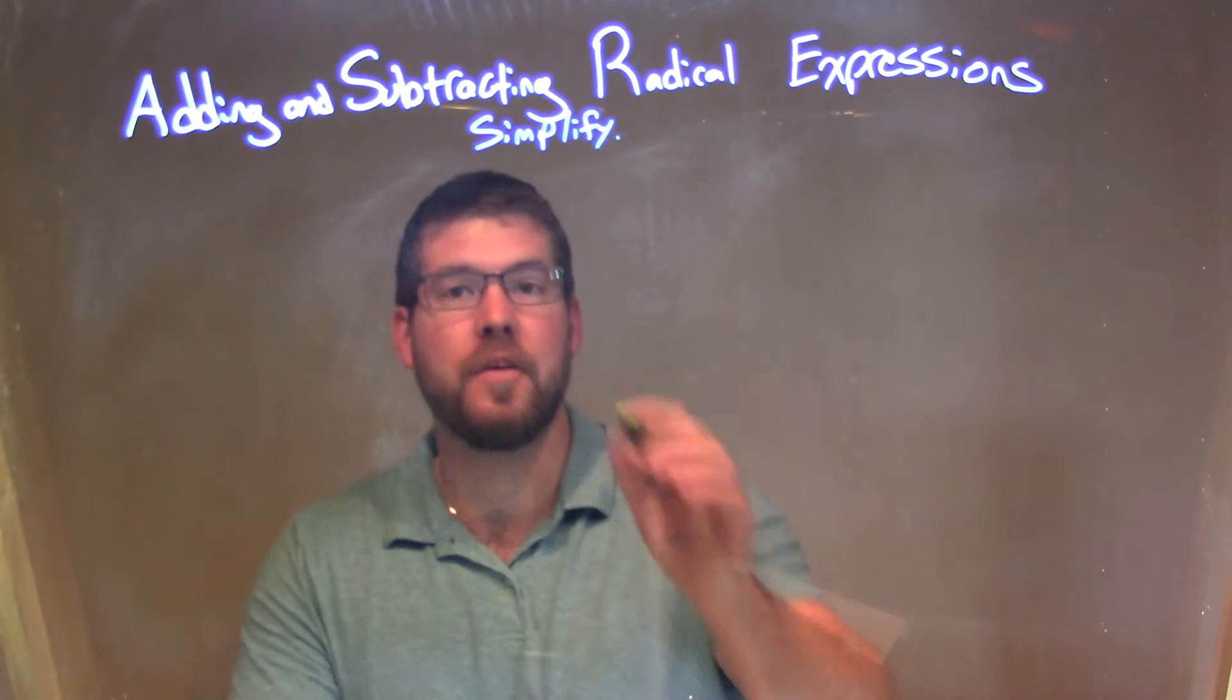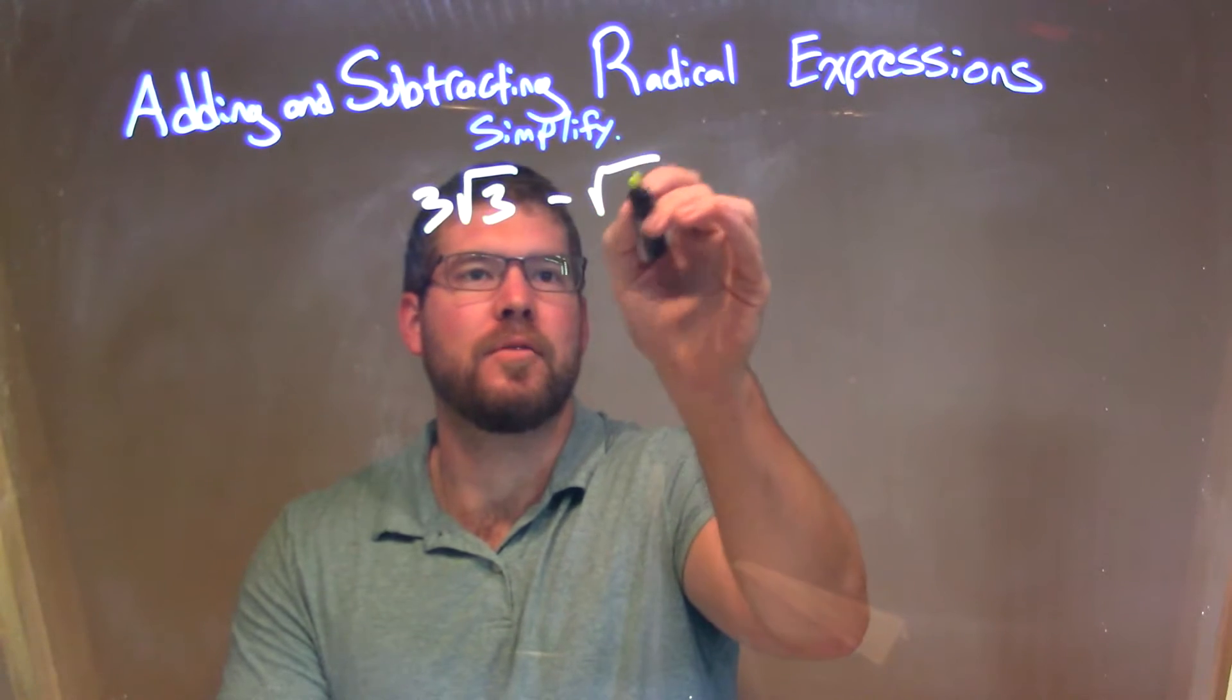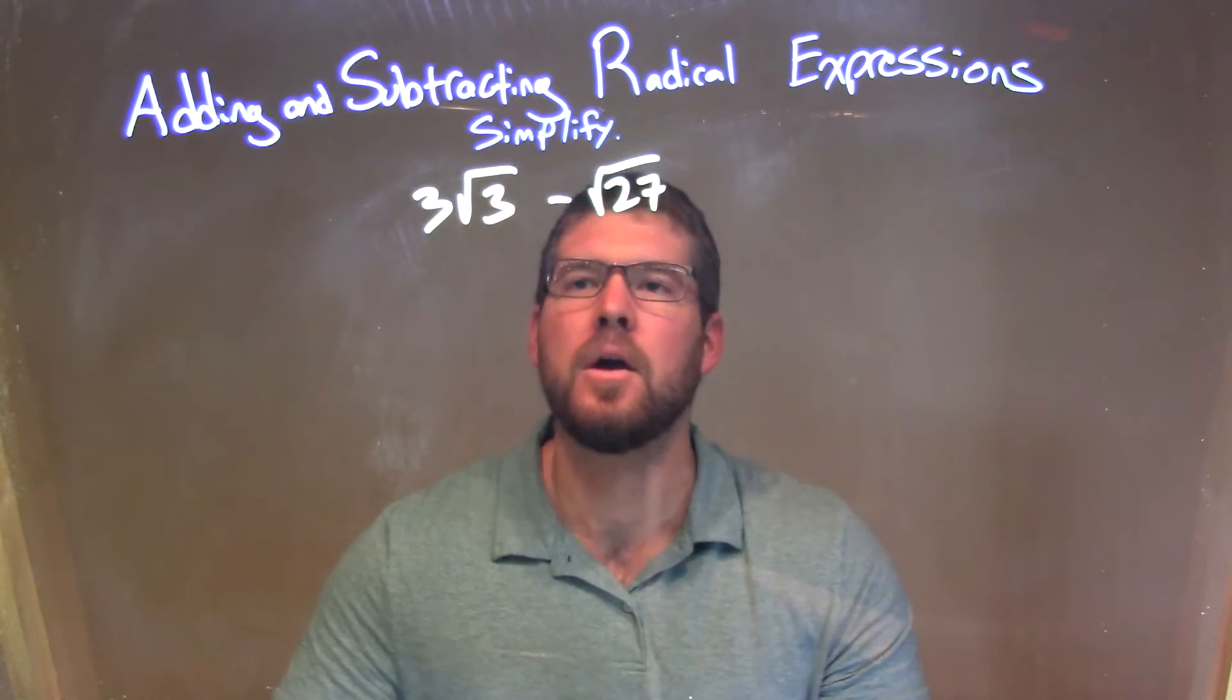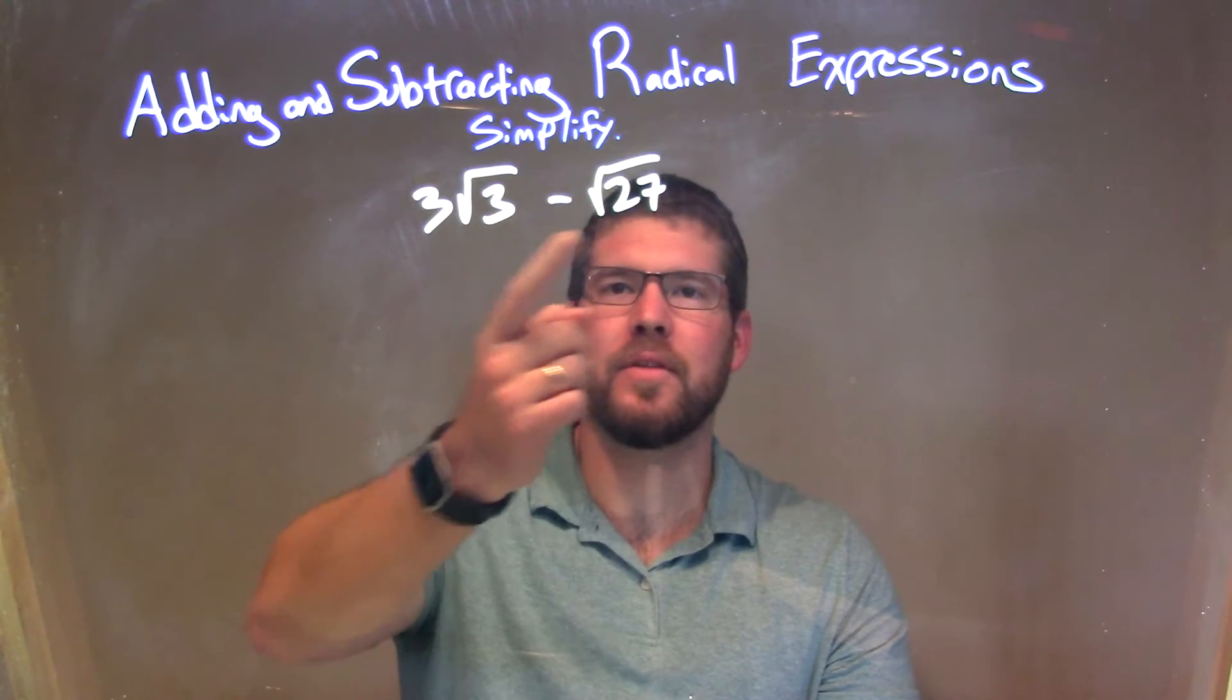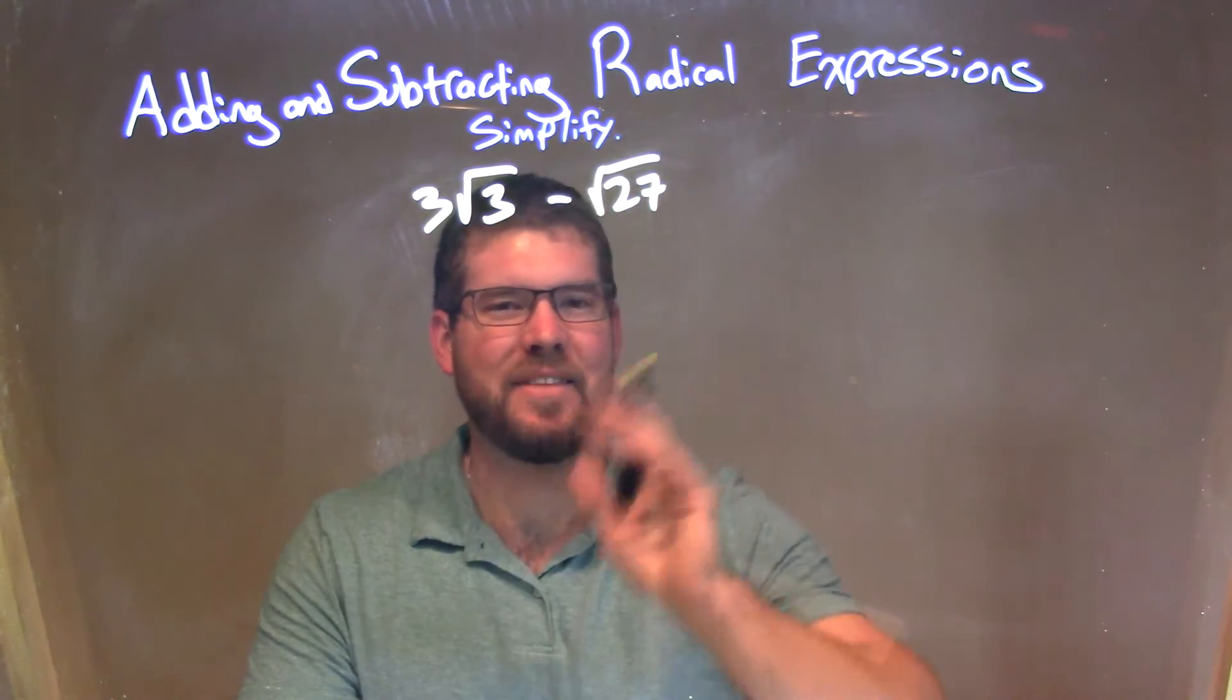So if I had to simplify this problem, 3 square root of 3 minus the square root of 27, well, what I want to do is have both of these have the square root of 3 in them, because the square root of 3 is there, but the square root of 27 is not.